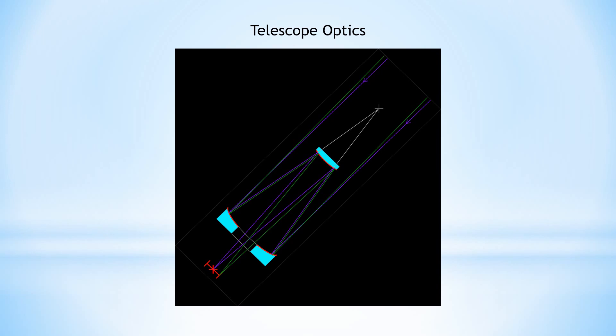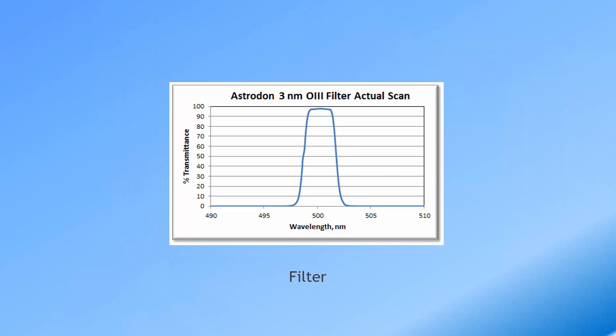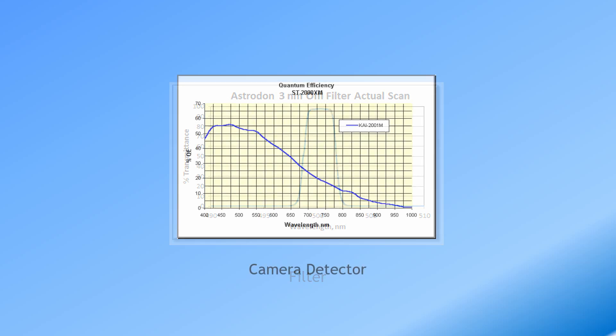Similar fingerprints are added for all the other optics in the optical system. A filter passes the light over a range of colors, adding its own fingerprint. For this filter, only the light near the O3 emission line is passed. The detector itself varies in sensitivity depending on the color of the light — you can see on this detector that it is less sensitive on the red end.